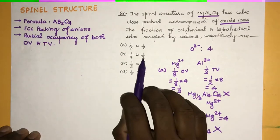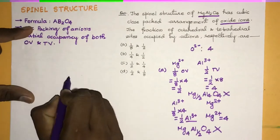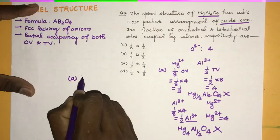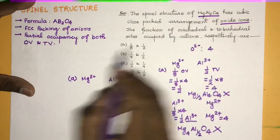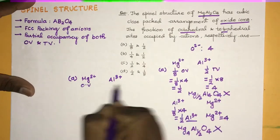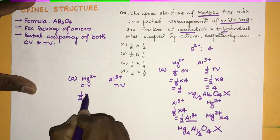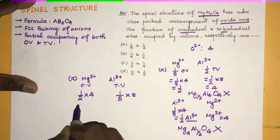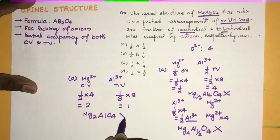Similarly you can check the other cases. Let the first condition be: Mg2+ occupies 1/2 of the octahedral voids and Al3+ occupies 1/8 of the tetrahedral voids. Then 1/2 × 4 = 2 for Mg2+, and 1/8 × 8 = 1 for Al3+. So the formula would be Mg2Al1O4, which is still not satisfying the required formula MgAl2O4.